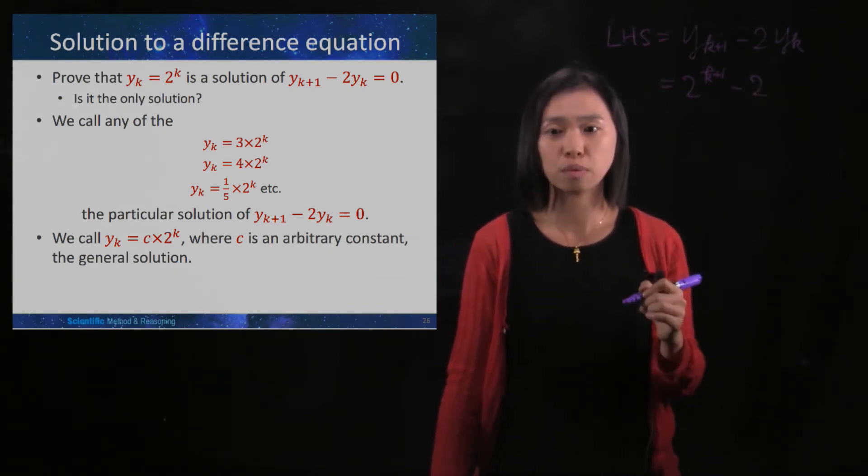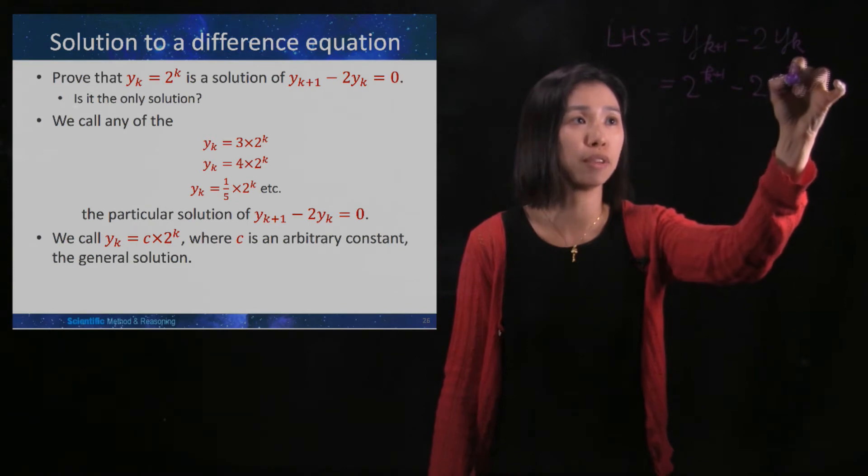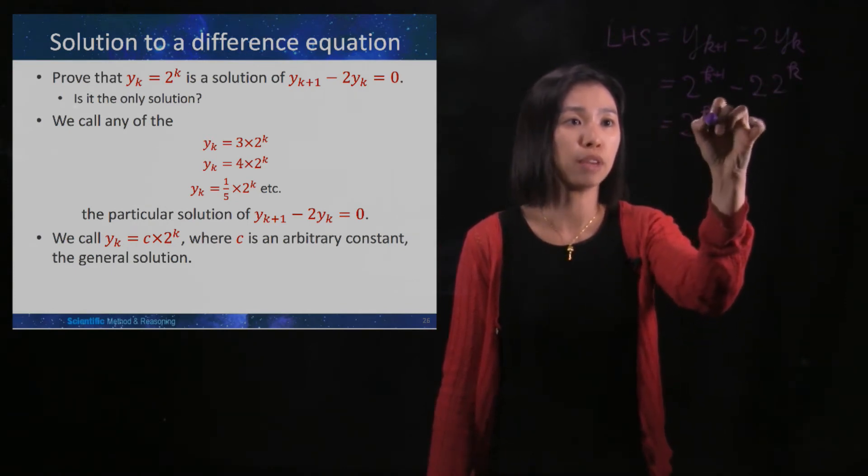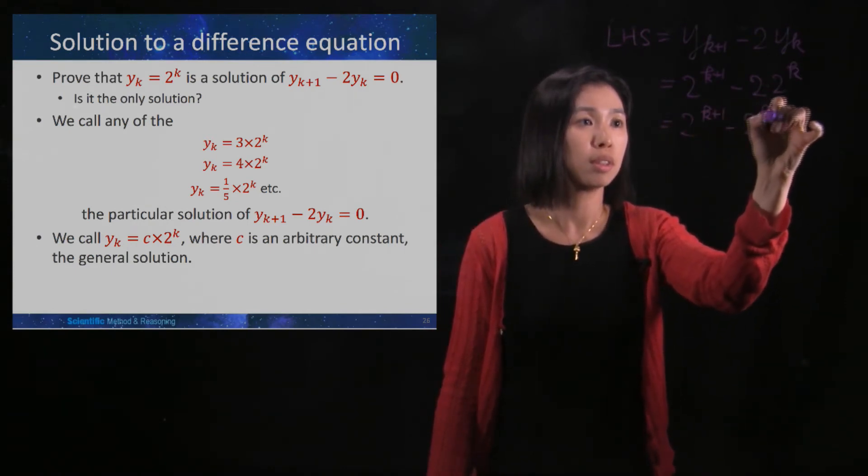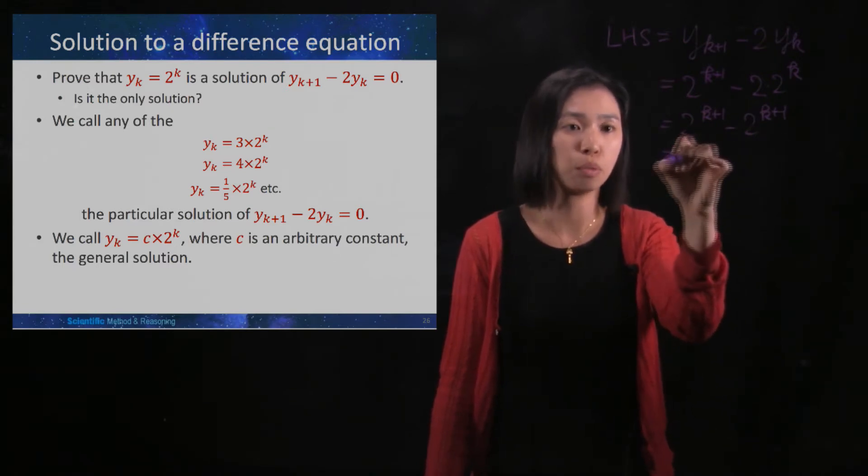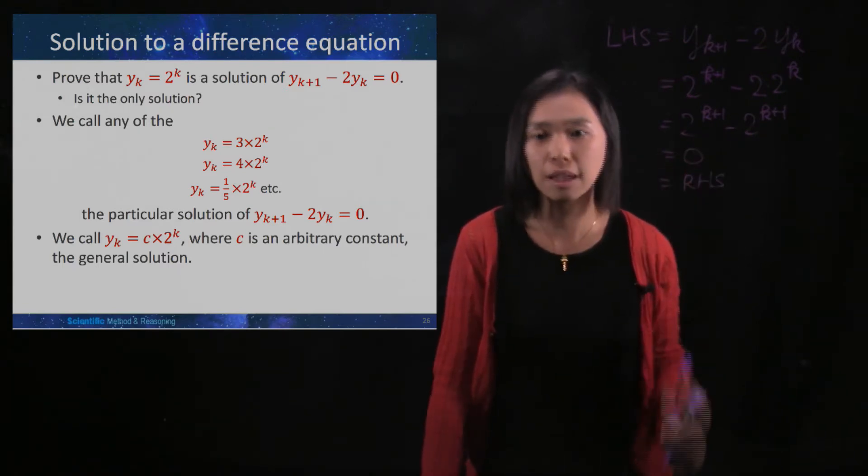And then you minus 2 times yk. yk is 2 to the power of k. So this is 2 to the power of k plus 1 minus 2 times 2 to the power of k, which is 0. And it's the same as the right hand side.